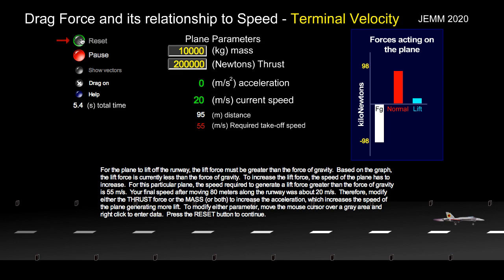At the point that it hits zero acceleration, that means the drag force is exactly equal to the thrust. In other words, for this plane, if the thrust is 200,000 newtons, the drag force is also equal to 200,000 newtons when the acceleration is zero.